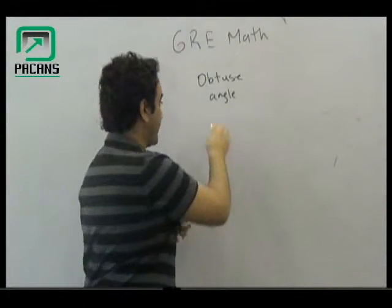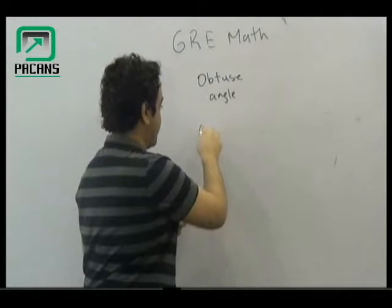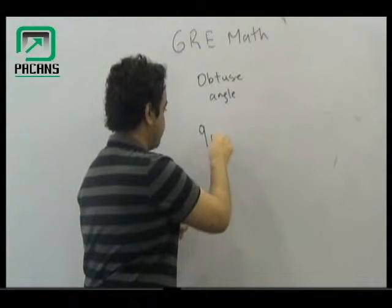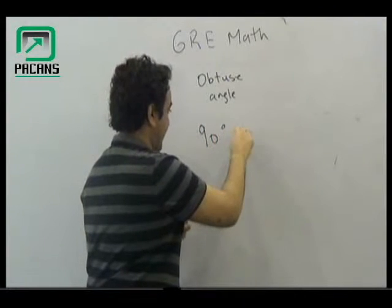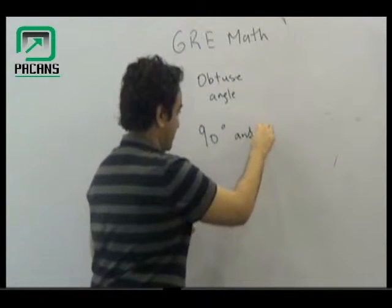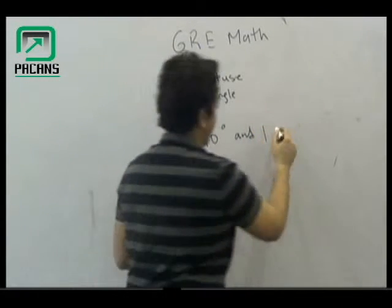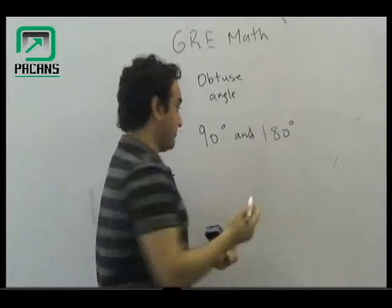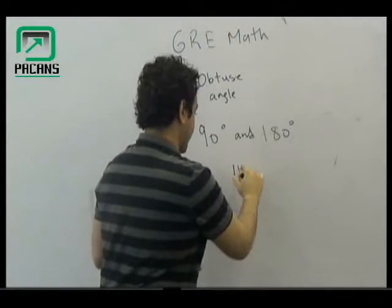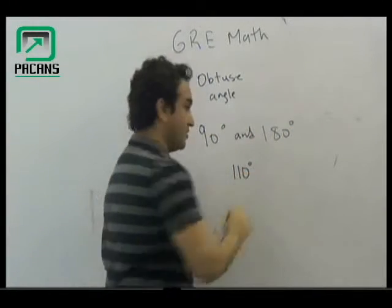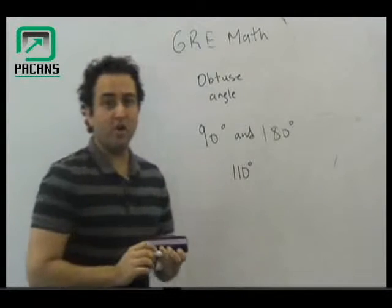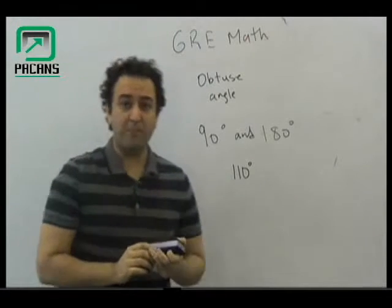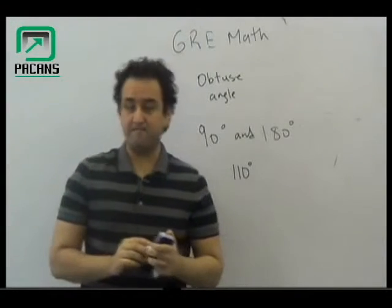Obtuse angle is the one which is between 90 and 180. So, if you have an angle which is 110 degrees, that would be called an obtuse angle.